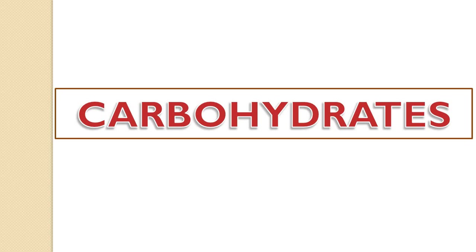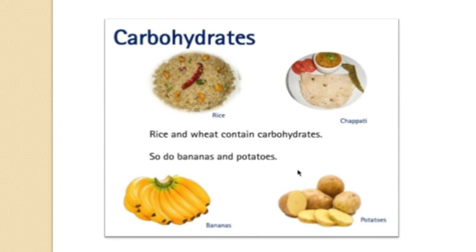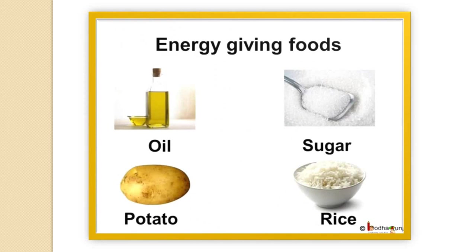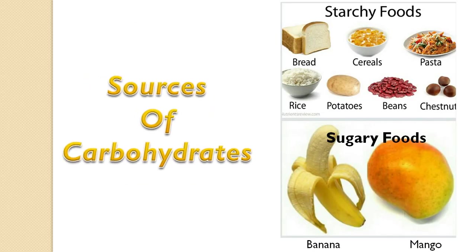The first nutrient is carbohydrates. Rice and chapati are the main part of each meal because they give us energy. Oil, sugar, potato and rice are all energy giving foods — they are carbohydrates. There are two main types of carbohydrates: sugar and starch.